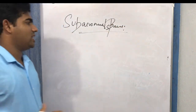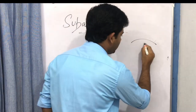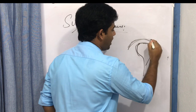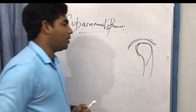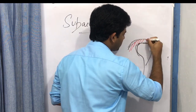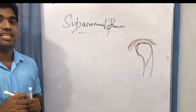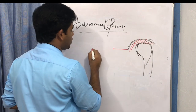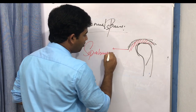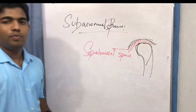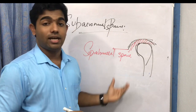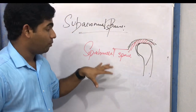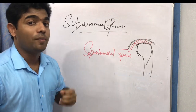The subacromial space is a potential space — not a bursa — that exists between the coracoacromial arch above and the humeral head below. It is also known as the suprahumeral space. Some studies consider it a functional joint, similar to the scapulothoracic joint, but here we treat it as a space.